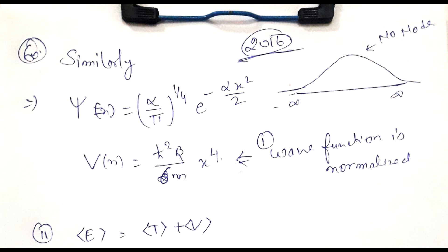Similarly we can solve question 60. The wave function is given for a hydrogen atom — an electron revolving around a positive charge in a central potential. We draw this wave function; it has no node, so it is a valid trial function.